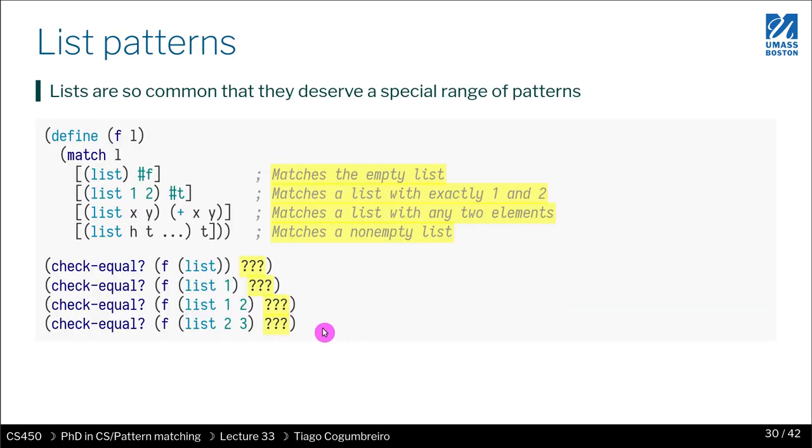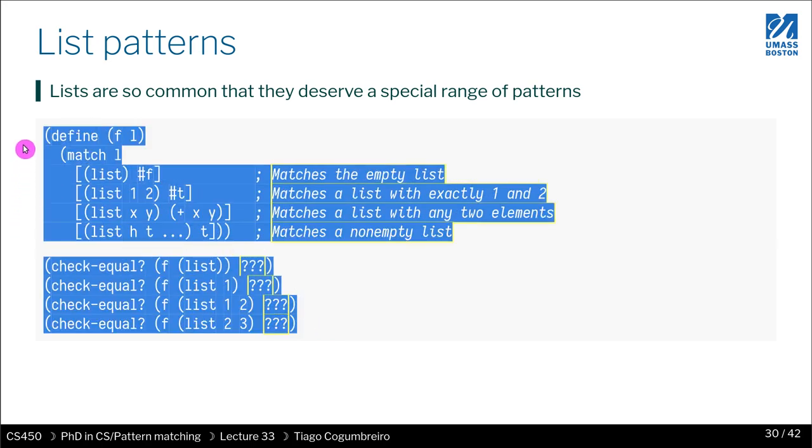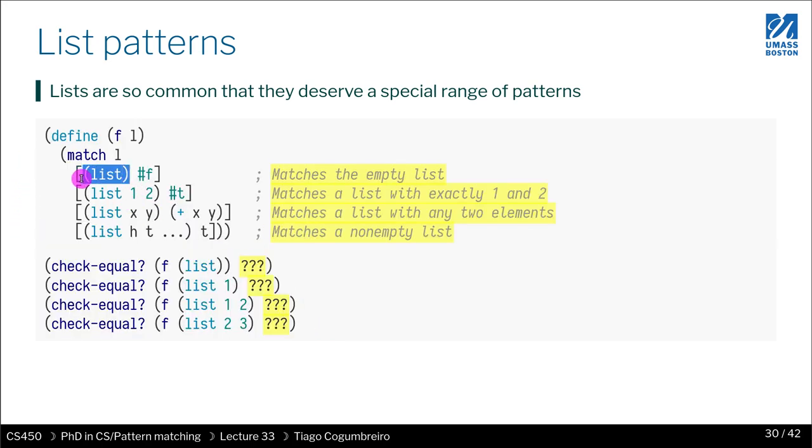So another thing that pattern matching allows is for something even more interesting, which is you can write the patterns, the structure of your data type. So for instance, with the list, you can say I want to match L with the empty list. I want to match L with the list of exactly two arguments. And I want to say let the first argument, the first element of the list be X, the second element of the list be Y. And a more interesting one is even this one, which is saying I want to take the first element, I want to call it H, and I want to take the rest of the list to be T, and you use the ellipsis to represent that.